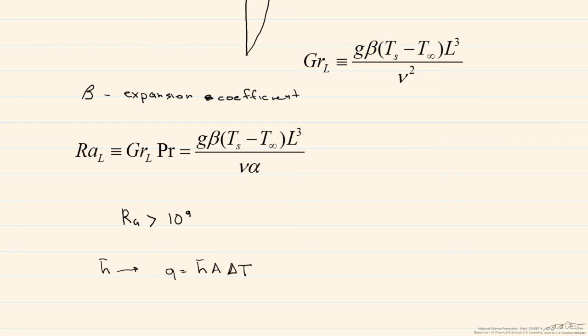In order to find our H, we need to find our Nusselt number, which is a dimensionless parameter, and this is equal to H times the length scale, which I'll put as L here, divided by the thermal conductivity of the fluid.